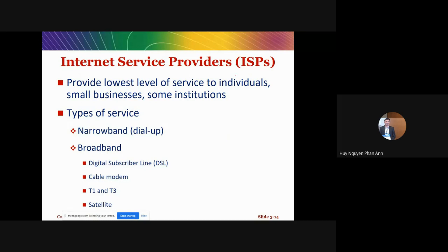The ISP — Internet Service Provider — provides internet access; you probably know examples like Viettel or FPT. In the near future, internet may also be provided by satellite, like Elon Musk's project to launch many satellites to broadcast internet all over the world.